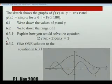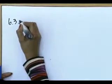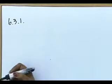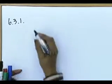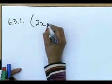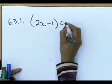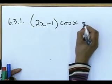6.3.1 is the ugly one. And I want to tackle that one with you. 6.3.1. They ask you, explain how you would solve the question 2x minus 1 times cos x equals 1.